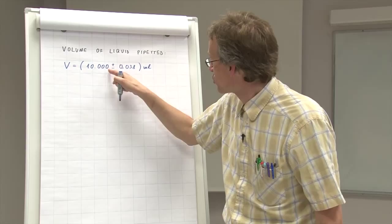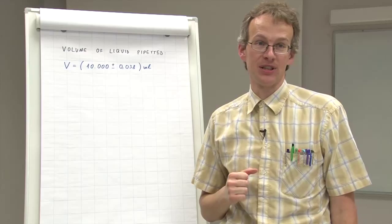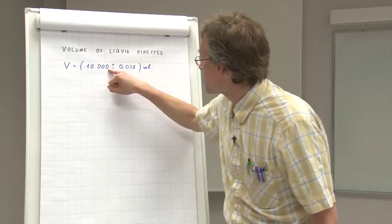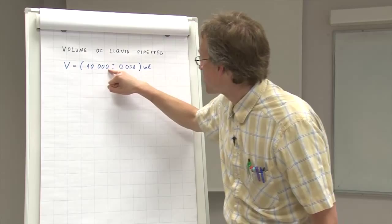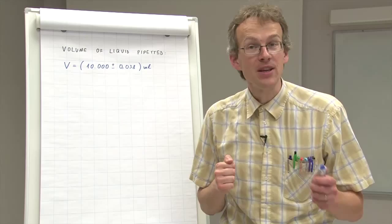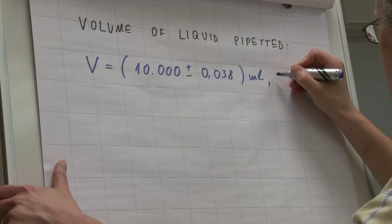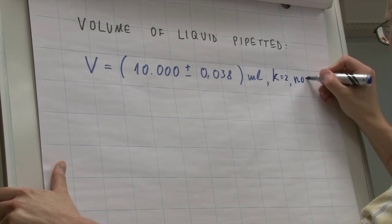But now this is not yet enough. You remember that uncertainty always is associated with some kind of probability. So we never can guarantee that the pipetted volume really is with 100% probability within this range. Therefore we also must give some information to the people about the probability distribution. And in this particular case we can write the following: k is equal to 2 and norm.